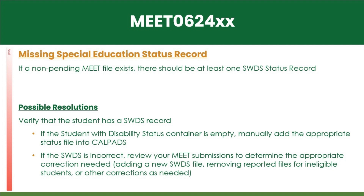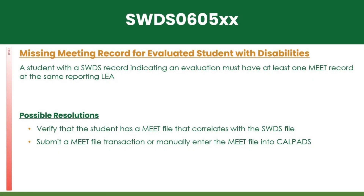Plan 0620: Your LEA has reported a meet file for a student who does not have an active, eligible, and participating status. This often occurs when initial meetings have been affirmed without parent signature. SWDS 0605 indicates you are missing a meet file. The meet file for each status file of eligible and participating, or no longer eligible, must be reported.